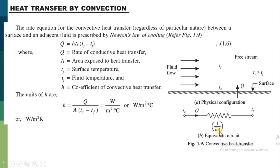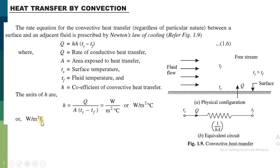Where H is the convective heat transfer coefficient and A is the surface area of this plate or surface. The rate equation for convection heat transfer between a surface and adjacent fluid is prescribed by Newton's law of cooling. Newton's law of cooling states: Q equals H times A times delta T. Q is the rate of convective heat transfer, A is the surface area, Ts is the surface temperature, Tf is the fluid temperature, and H is the convective heat transfer coefficient. The unit of Q is Watt, surface area is in meter square, and temperature is in degree centigrade or Kelvin. So the unit of convective heat transfer coefficient H is Watt per meter square degree centigrade or Watt per meter square Kelvin.